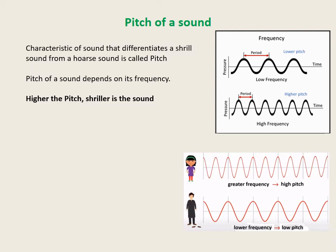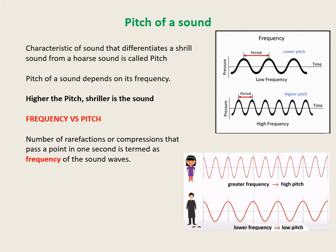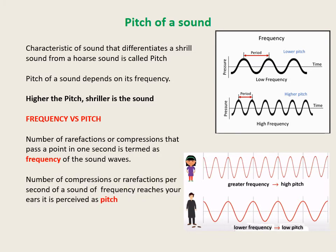What is the difference between pitch and frequency? The number of rarefactions or compressions that pass a point in one second is termed as the frequency of the sound wave. When a large number of compressions or rarefactions per second — a sound of greater frequency — reaches your ears, it is perceived as high pitch. When fewer compressions or rarefactions per second — a sound wave of lower frequency — reaches your ears, it is perceived as low pitch. Pitch is a sensation of the frequency of a sound wave on your ears.